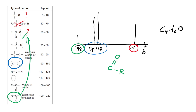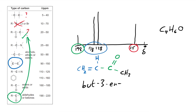We know we have a carbon-oxygen double bond, single-bonded to another carbon, with our remaining carbons and hydrogens building out the chain. We know we have to have a double bond somewhere in the chain, and so we end up with this structure here — but-3-en-2-one. That's a fairly simple carbon-13 NMR spectrum, but they get a lot harder. Remember, we have this range of chemical shifts for carbons in these environments, because what they're bonded to is going to affect their chemical shift.